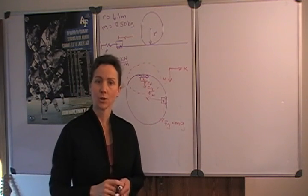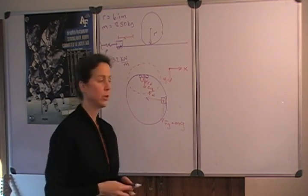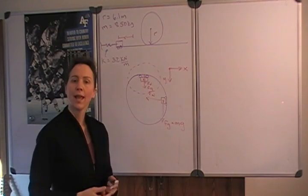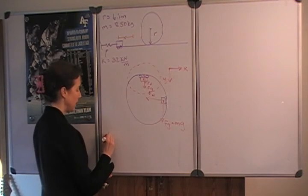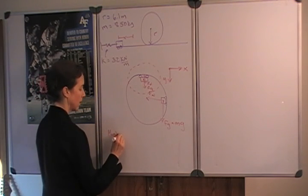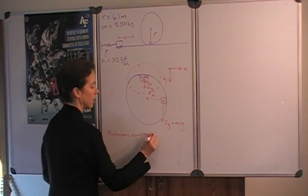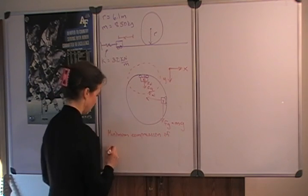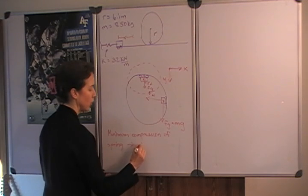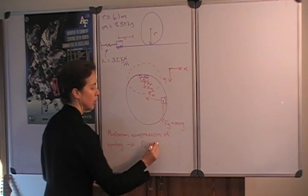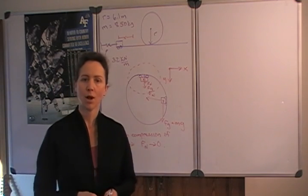Now, what does it mean to barely stay on track? Well, that means that the supporting force of the track, which we've called the normal force here, is minimal or on its way to zero. So, the minimum compression of the spring will lead to a situation where the normal force approaches zero. So, we'll keep that in mind when we analyze this problem.